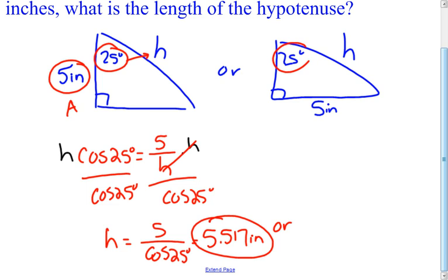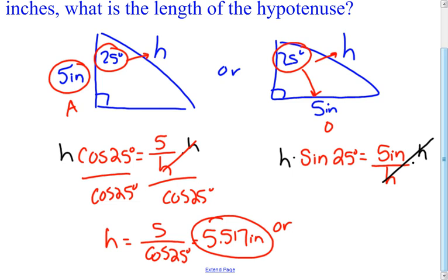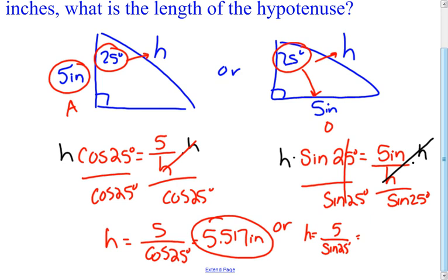The other way: if the 5-inch leg is opposite the 25-degree angle, then you have O and H — opposite over hypotenuse — which means you use sine. Sine of 25 equals 5 over H. Multiply both sides by H, then divide by sine of 25. H equals 5 divided by sine of 25, which gives 11.83 inches. I need both answers in this case because I don't know which arrangement is correct.